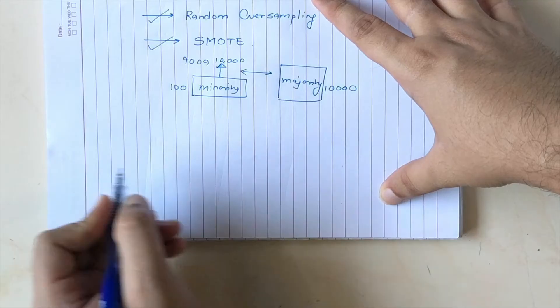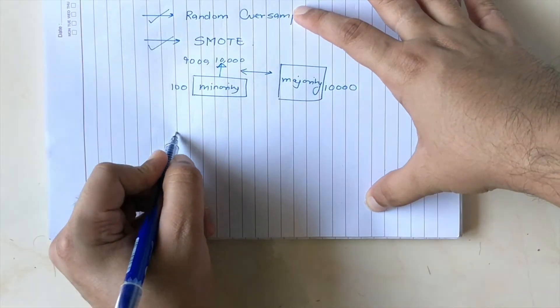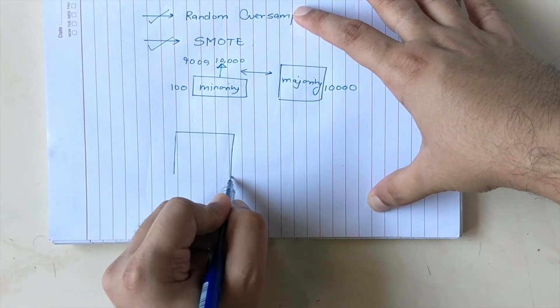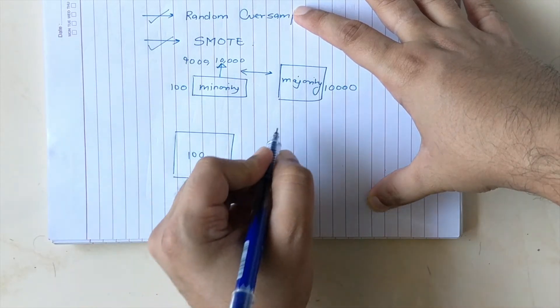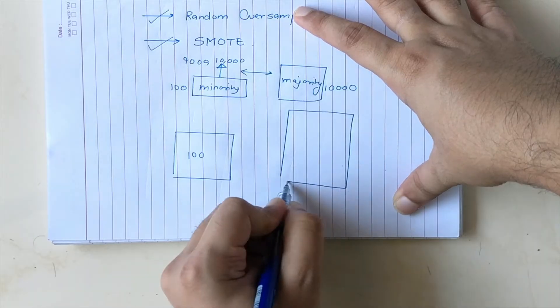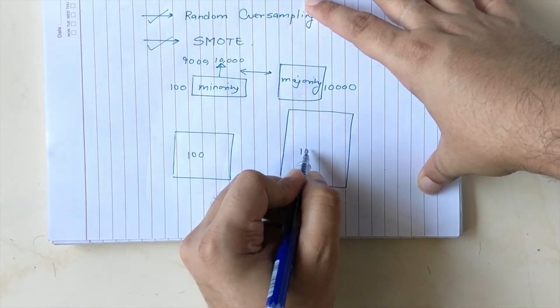So the way random oversampling works is you have your minority class and you have 100 samples and you have your majority class and you have 1,000 samples.